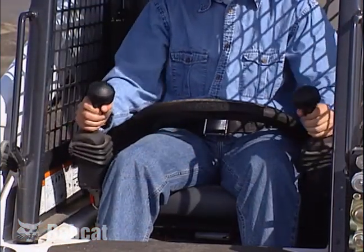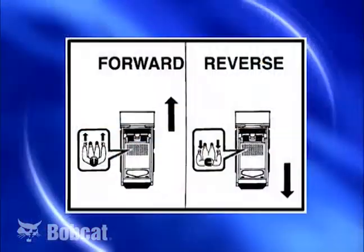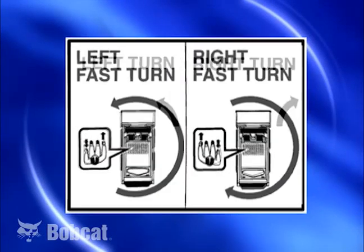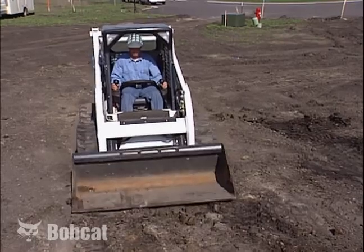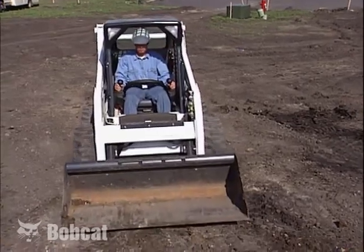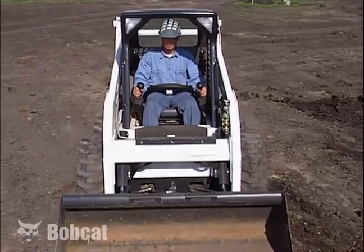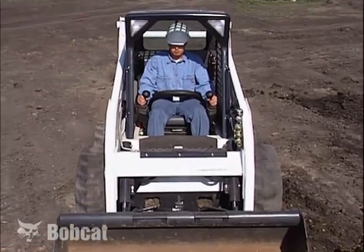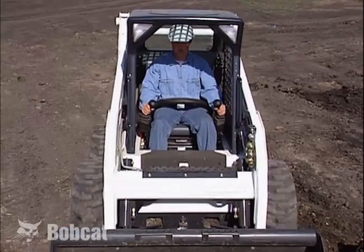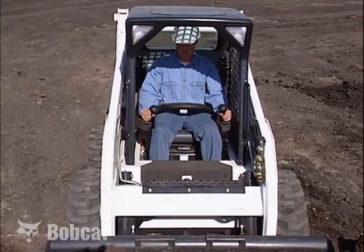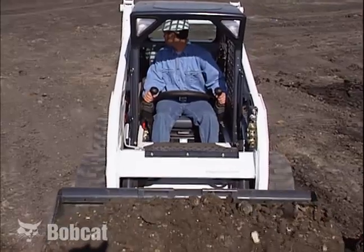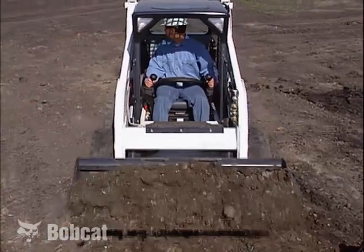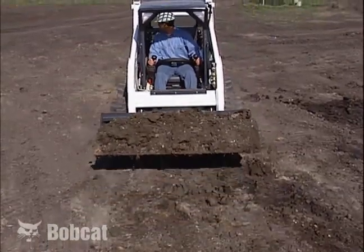Now check the steering lever controls. The control patterns and functions may vary depending on the machine. Some Bobcat loaders are equipped with hand controls, which allow the operator to steer and operate lift and tilt functions by hand simultaneously. It is extremely important to be familiar with the particular Bobcat loader you are operating.